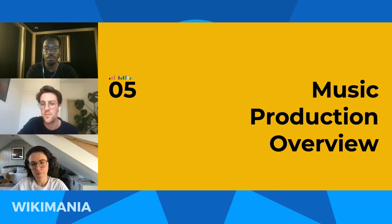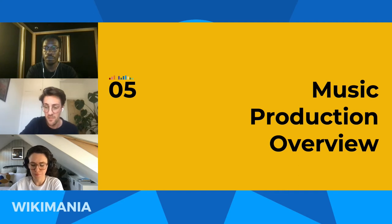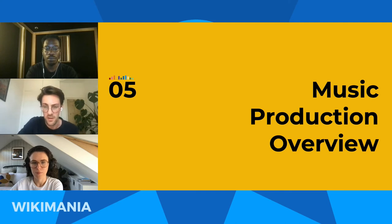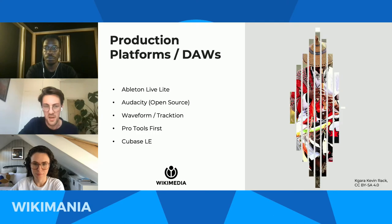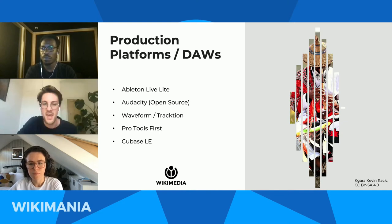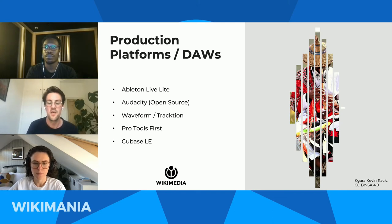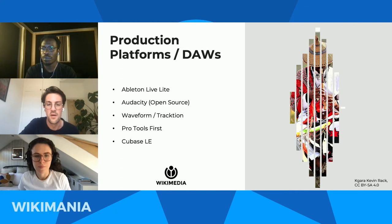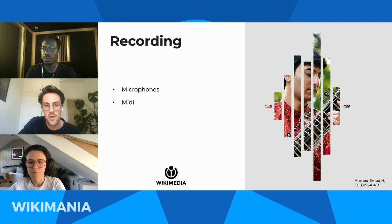Now we'll look at music production and give you an overview of how we create these sounds. Some of you may already know this, and we'll keep it top-line. Firstly, let's look at the tools we can use on a computer. We have several freely available options: Ableton Live Lite, Audacity (an open-source piece of software), Waveform/Traction, Pro Tools First, and Cubase LE. All are available for free download. For this presentation we're using Ableton Live Lite — we use it a lot at our company and it's great for getting creative quickly with sound.